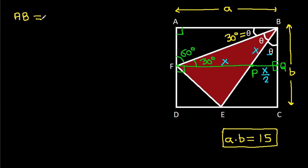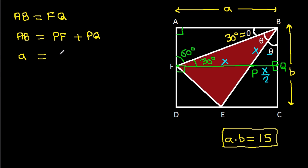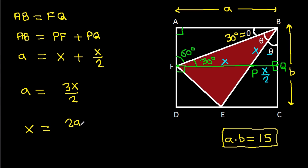Now, AB equals FQ, and AB equals FQ equals PF plus PQ. PF is X and PQ is X over 2, so A equals 3X over 2. Therefore X equals 2A over 3.